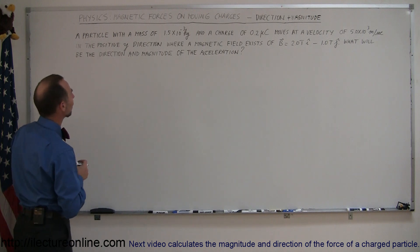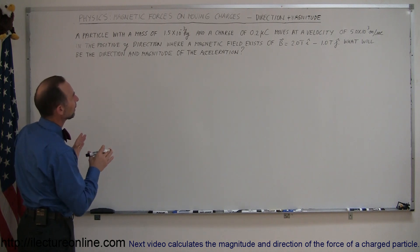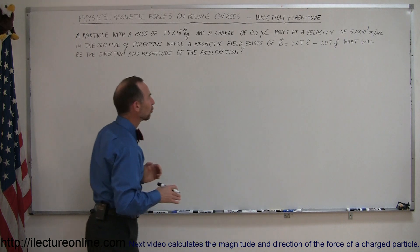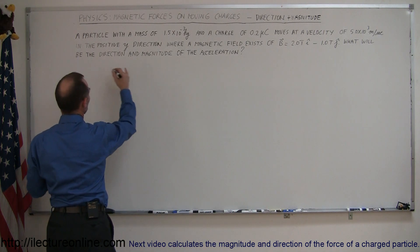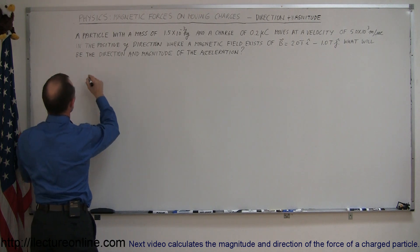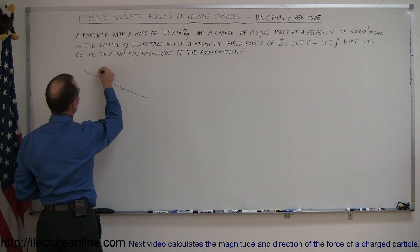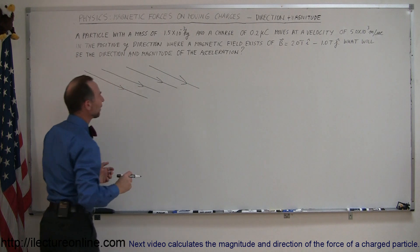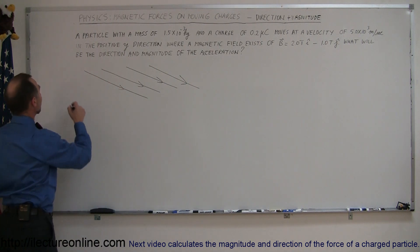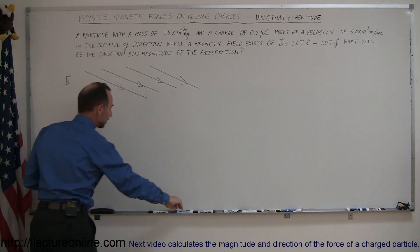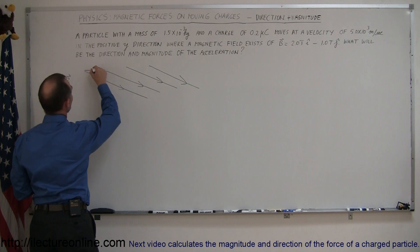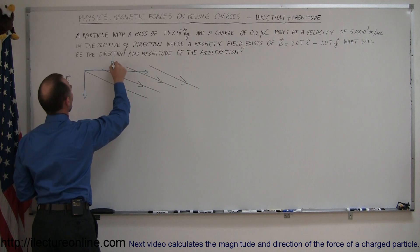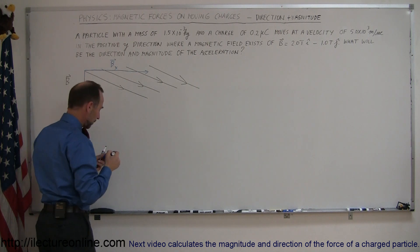First, let's make a sketch to see what's going on here. We have a magnetic field that has the components of two Teslas in the positive x direction and minus 1 Tesla in the minus y direction. So two Teslas in the x direction, minus 1 in the y direction — the magnetic field is in this combined direction. We can see that the B field has an x and a y component: here would be the x component of the B field, and there would be the y component of the B field.